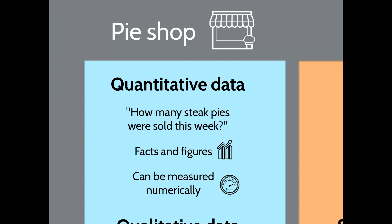Quantitative data is very accurate and correct, but it doesn't necessarily give you any in-depth insight into what to do for the future. You can look at how many steak pies you've sold this week, but what does that really tell us? Does it tell us that steak pies are what people actually want, or is it just that they bought them because that was all that was available? It doesn't really delve into the actual habits of the shopper.